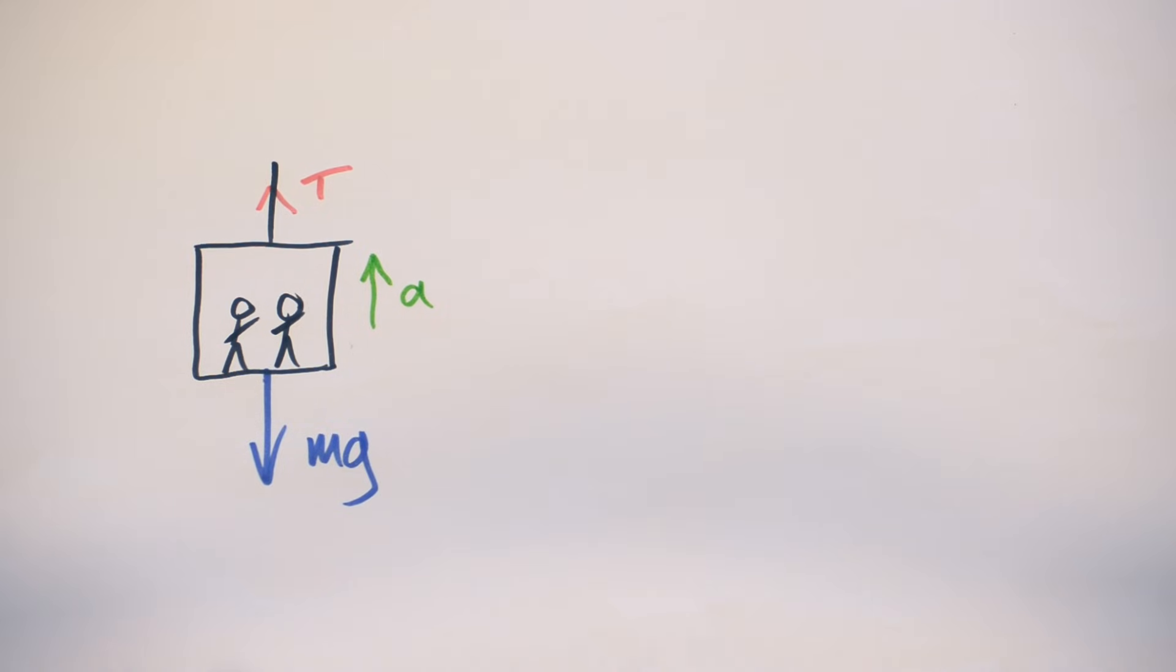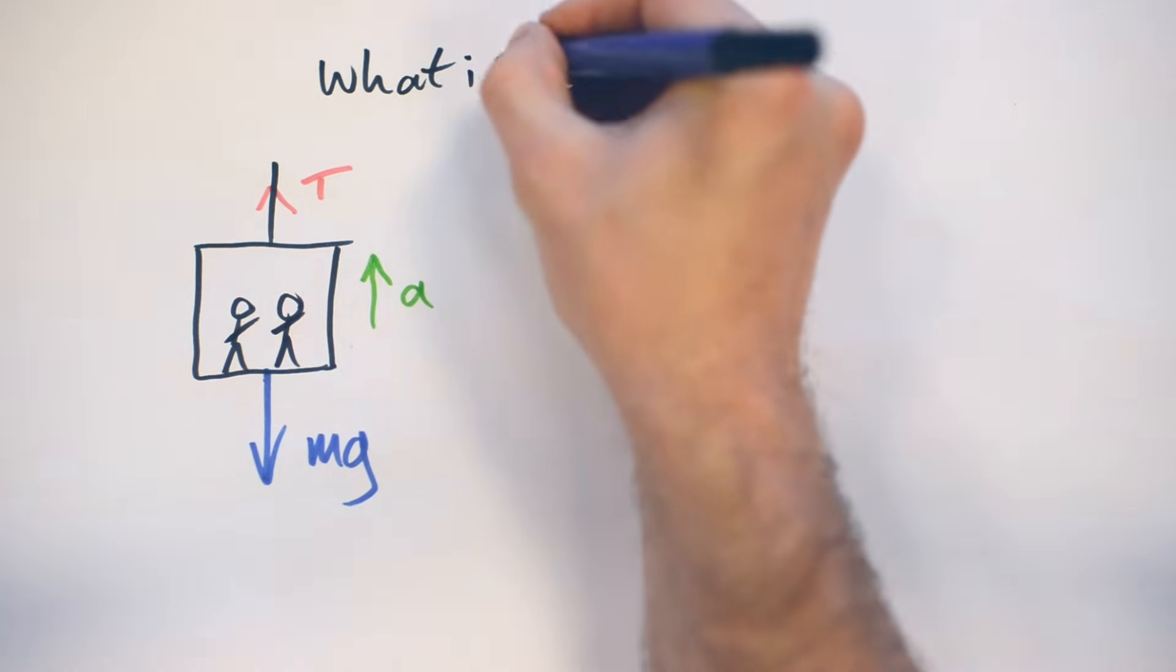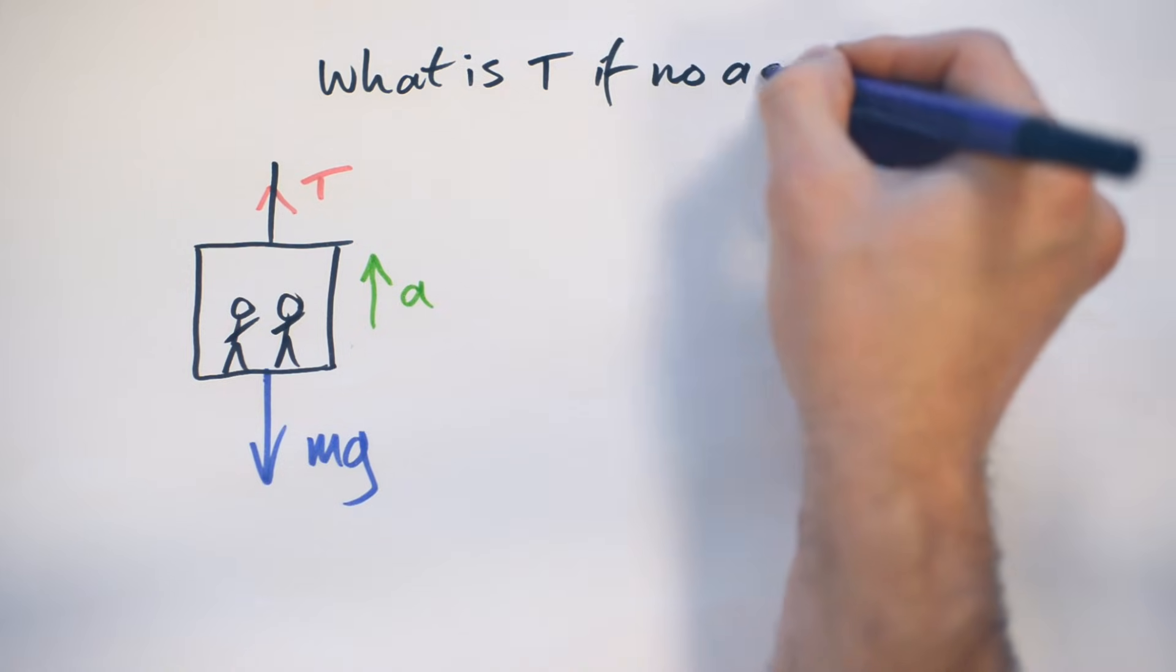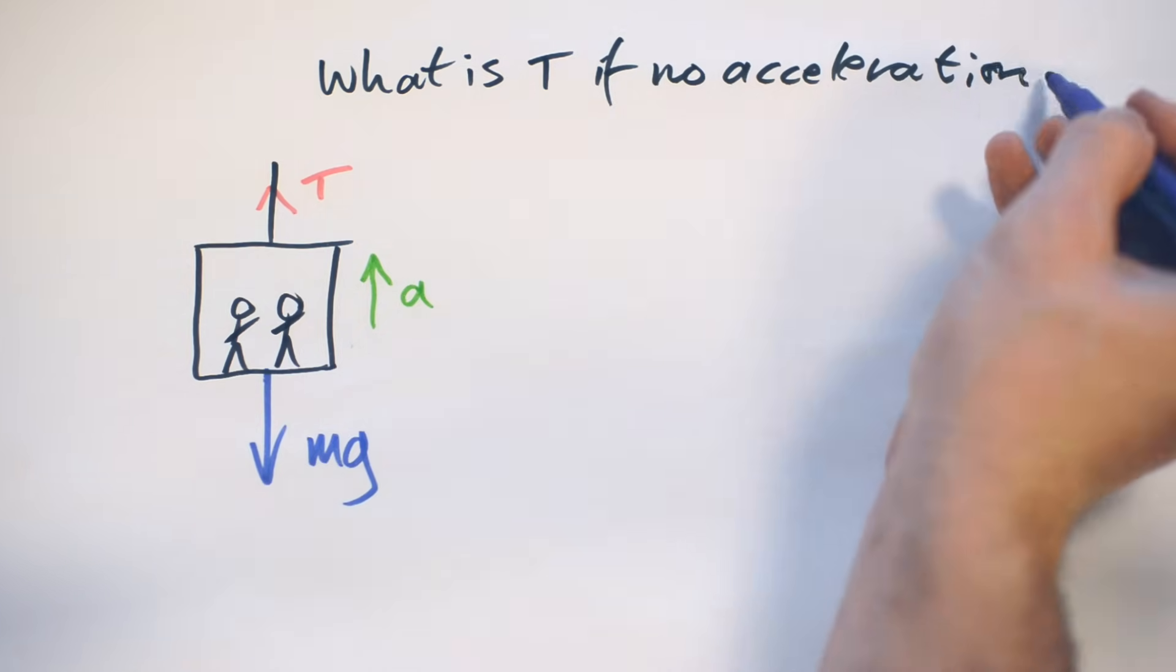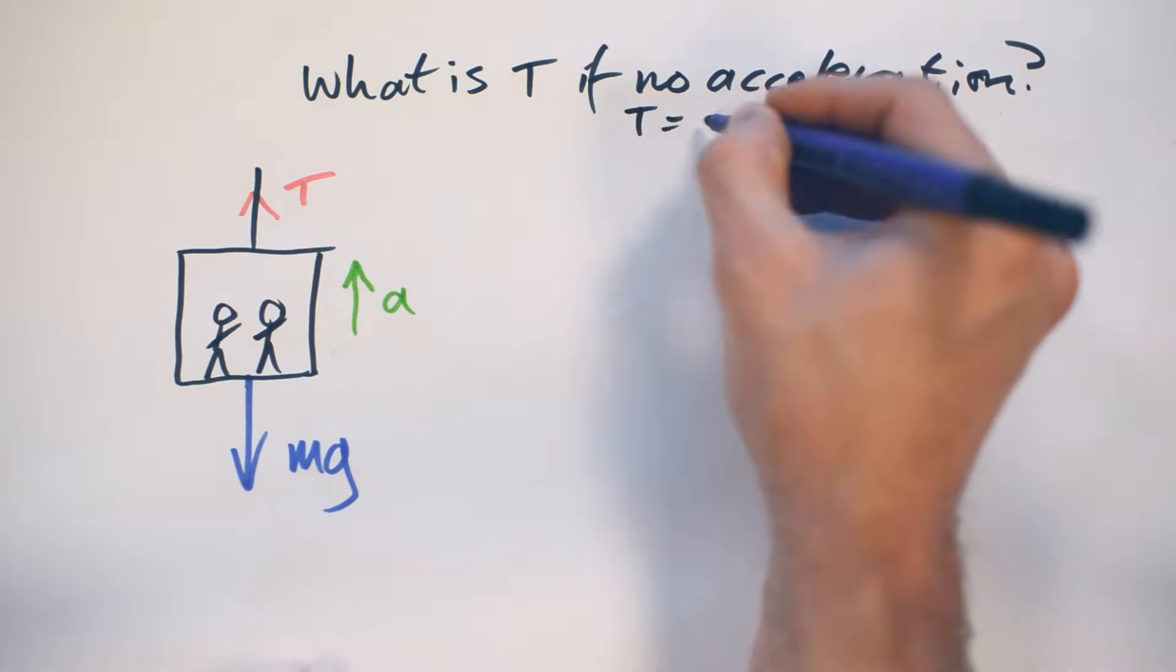Well, my rule of thumb is, first of all, what is T if no acceleration? If there's no acceleration, then we know that T, like we just saw, has to equal Mg.